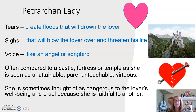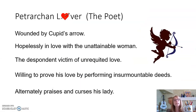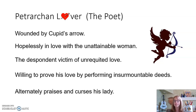She is sometimes thought of as dangerous to the lover's well-being and cruel because she is faithful to another. By the way, in the picture here, this is a castle that may look a lot like the Cinderella castle — because the Cinderella castle is based off of it. This is a real castle in the German Alps called Neuschwanstein, and it's a fantastic place to visit. This is a typical idea of that fortress representing the Petrarchan lady who becomes the princess in all the fairy tales. The Petrarchan lover, the poet, is wounded by Cupid's arrow — hopelessly in love with the unattainable woman, the despondent victim of unrequited love. He is willing to prove his love by performing insurmountable deeds — think about those dragons that he needs to slay.